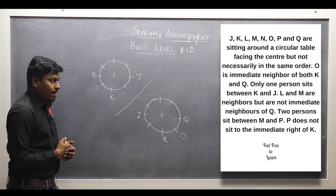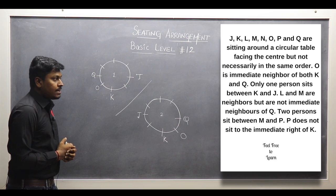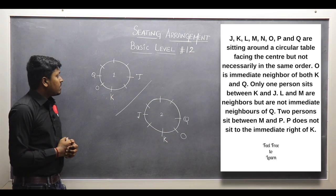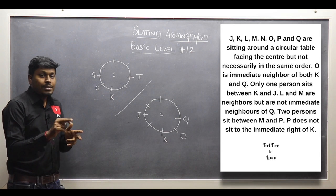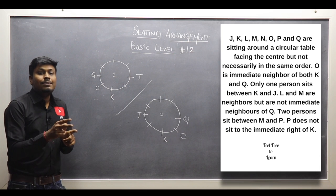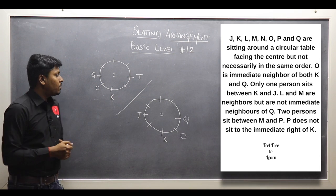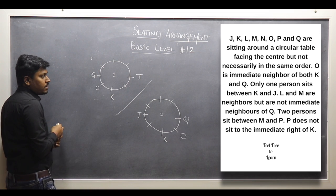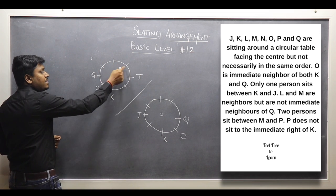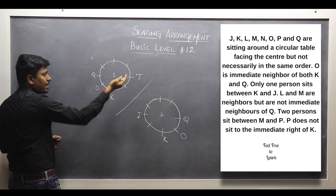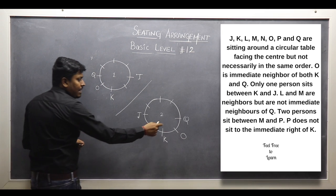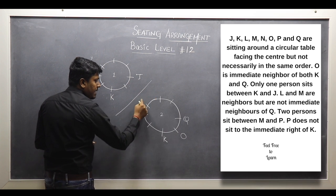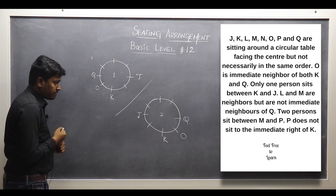Point number 3: L and M are immediate neighbors but are not immediate neighbors of Q. So the positions adjacent to Q are not for L and M. Only one valid placement remains for L and M as immediate neighbors while keeping them away from Q.